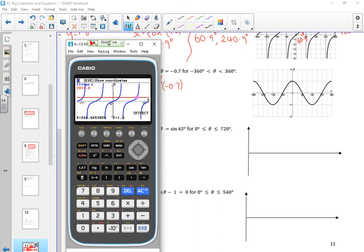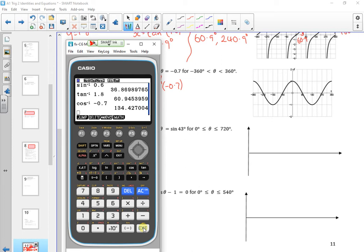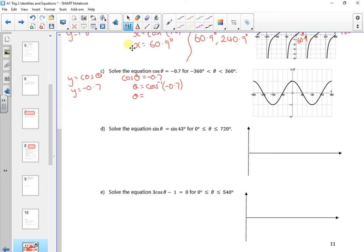From my calculator, so I'll do menu 1, shift cos and it was minus 0.7, there. So that gives me a value of 134.4. That's cool.